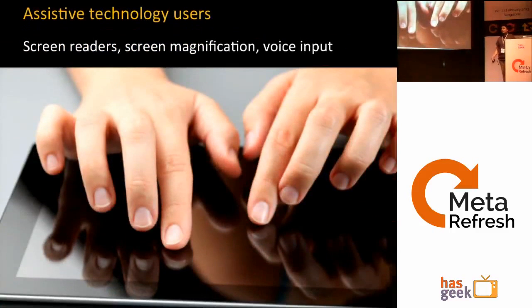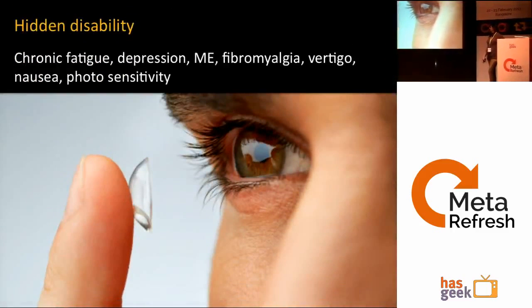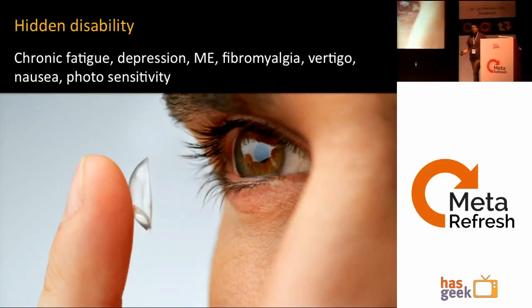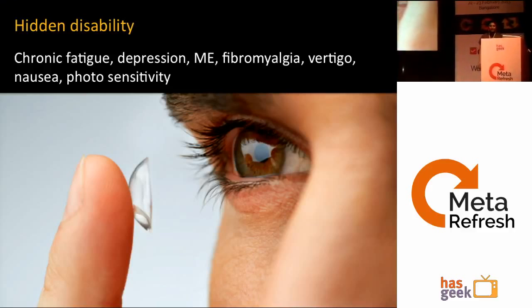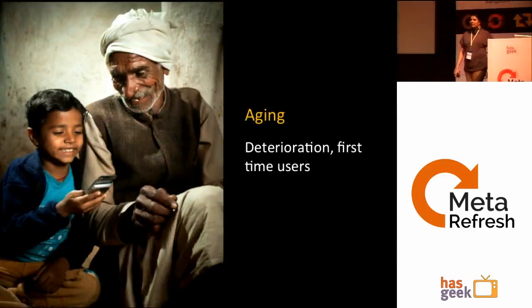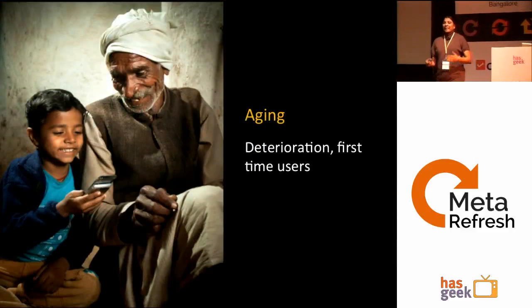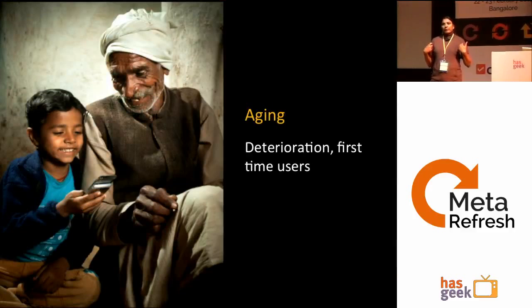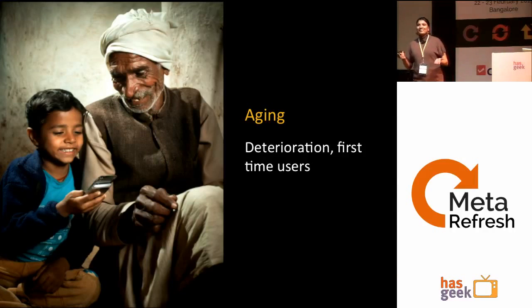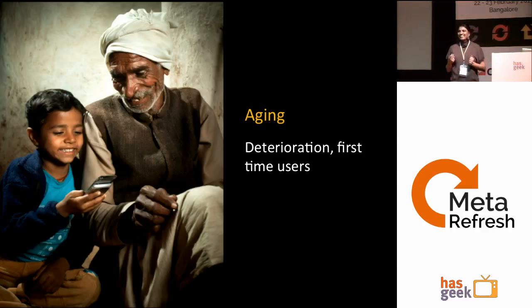A mobile application is accessible when it's ready for assistive technologies like screen readers. It also covers hidden disabilities like depression and chronic conditions, and aging — the way I use a mobile, my parents won't be able to use it the same way.